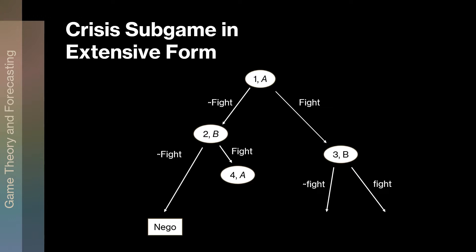At node number three, B has the same decision. A has made a move — A decides to fight. Now B has a choice: not fight or fight. If A chooses to fight and B chooses not to fight, we have a capitulation on the part of B — cap B. A gets what it wants; demand A is the outcome. However, B can choose to fight back, and now we get war A — a war initiated by player A. It makes a difference in the model whether the war is initiated by one player or the other.